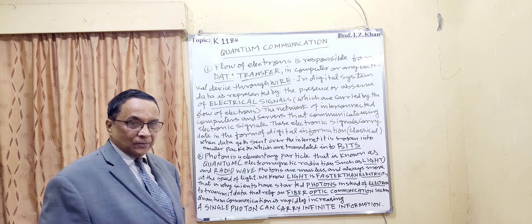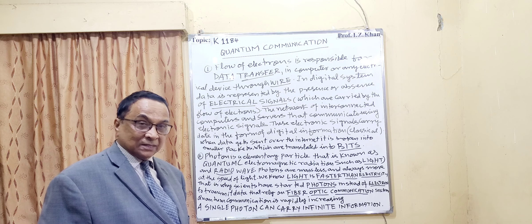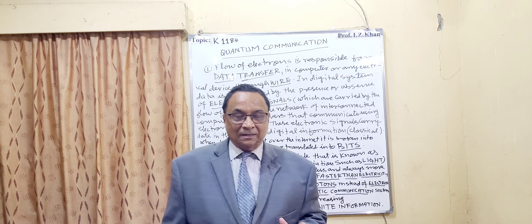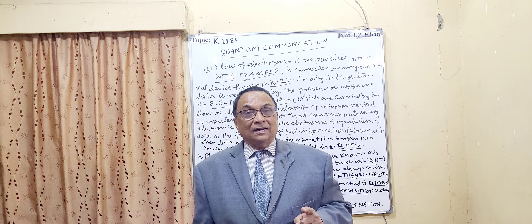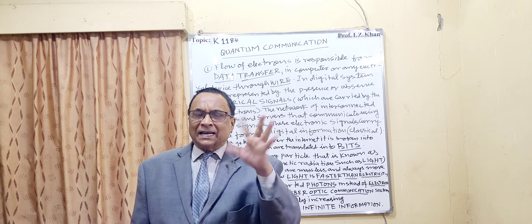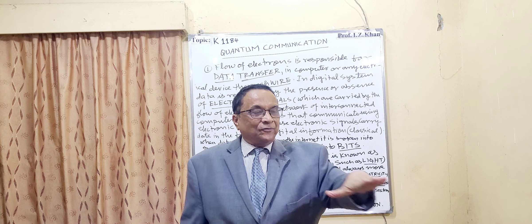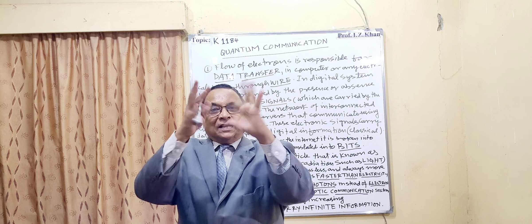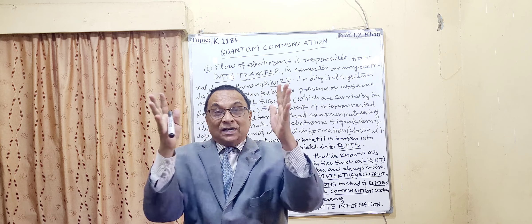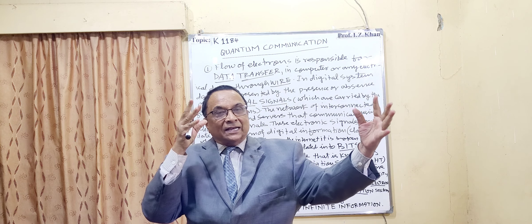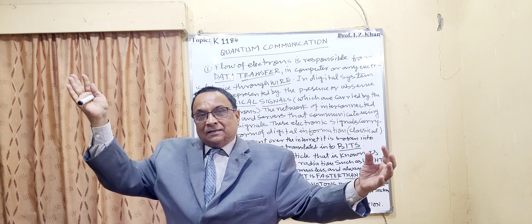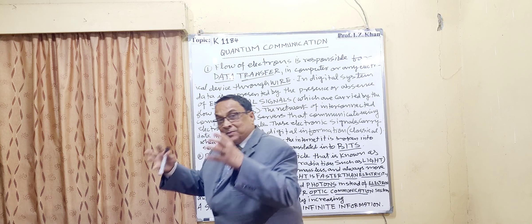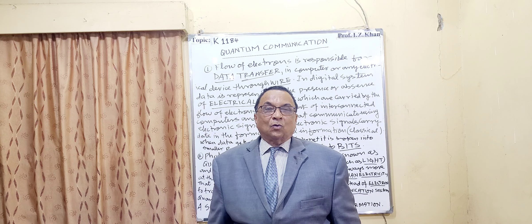A single photon — that is the biggest advantage of using photons to carry information or messages. A single photon can carry infinite information. Once it is in the form of quantum, multi-direction and infinity are there. You cannot fix only one position — plus, minus, zero, one. But once it is dancing with another pair, they are together, coordinating with each other — they are entangled. This pair is so much coordinated that even if separated, they will remain entangled. That is the beauty of quantum information.